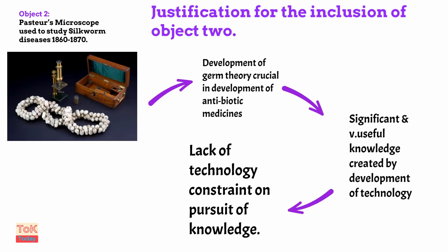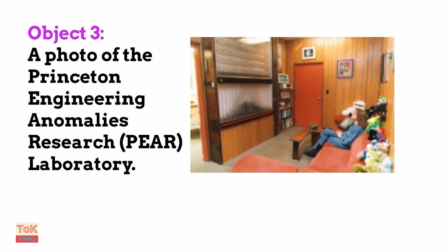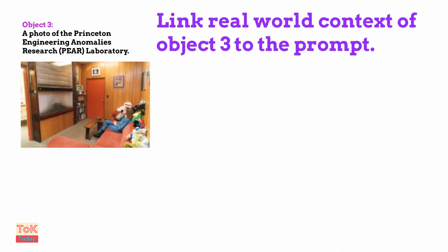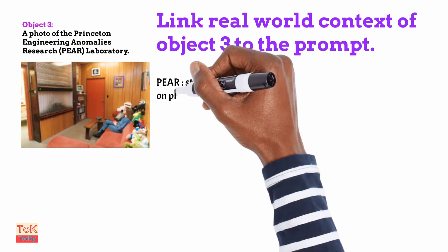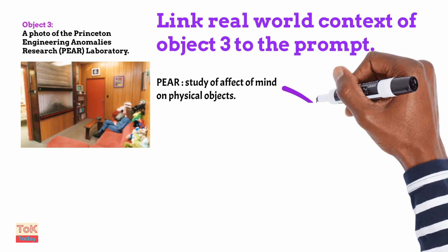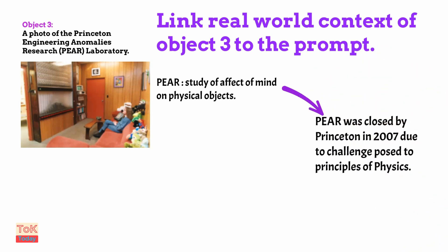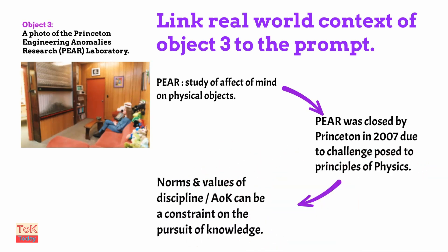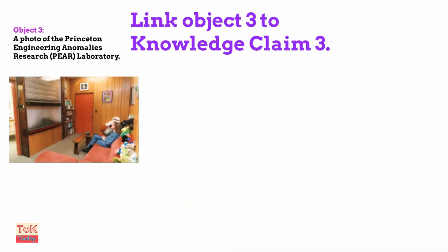Finally, we come to object three: a photo of the Princeton Engineering Anomalies Research laboratory, otherwise known as PEAR. Linking the real-world context to the prompt, we explain that PEAR was a place where they studied the effect of the mind and human consciousness on physical objects, and that it was closed down by Princeton University in 2007. The argument is that it was closed because it was challenging the principles of physics — demonstrating that the norms and values of a discipline such as physics, or the area of knowledge natural sciences, can in themselves be a constraint on the pursuit of knowledge.